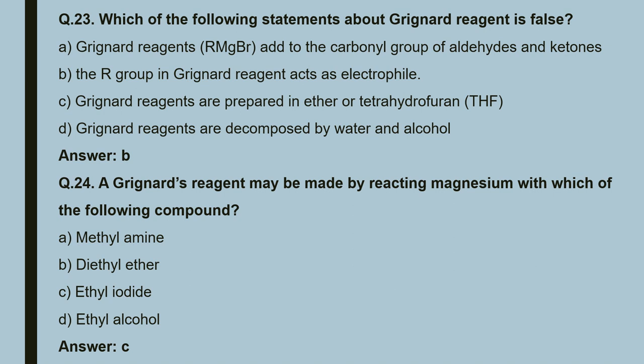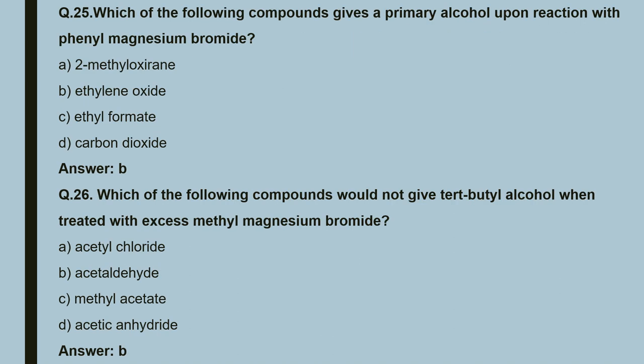Question 24: a Grignard reagent may be made by reacting magnesium with which of the following compounds — A. methylamine; B. diethyl ether; C. ethyl iodide; D. ethyl alcohol. The correct answer is C, that is ethyl iodide.